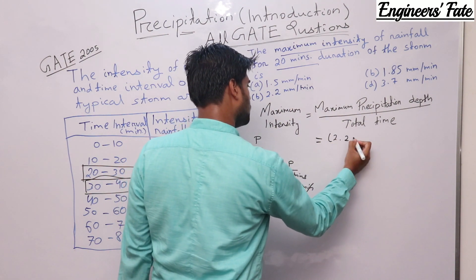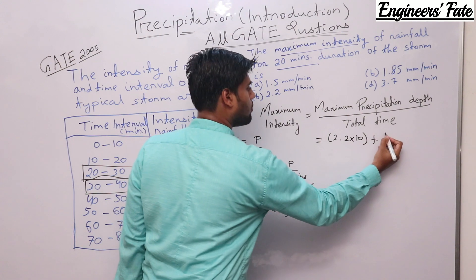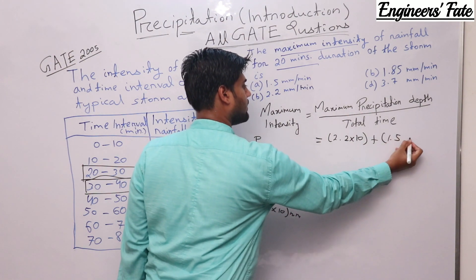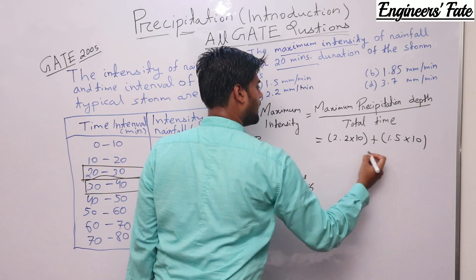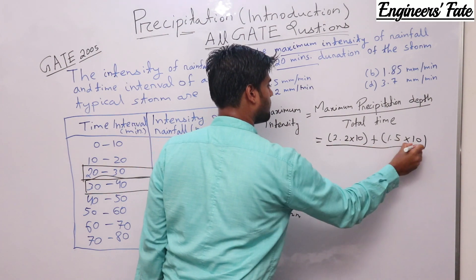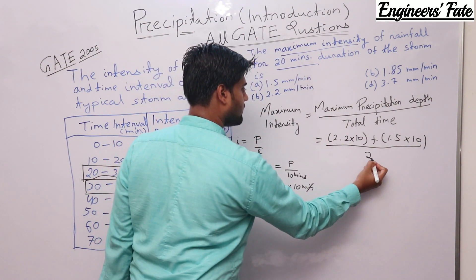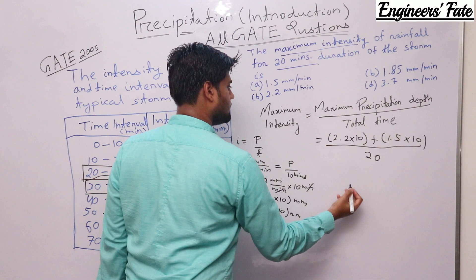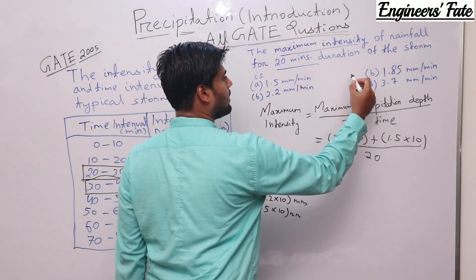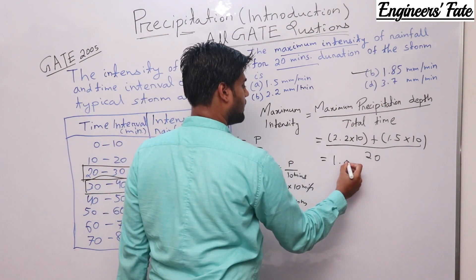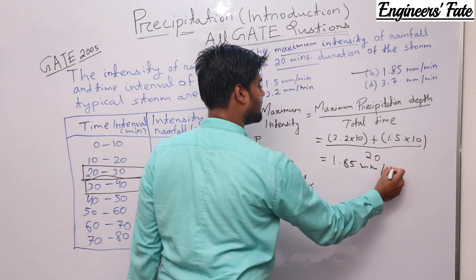The maximum precipitation depth is (2.2 × 10) + (1.5 × 10) over a total time of 20 minutes. Calculating this gives a maximum intensity of 1.85 mm per minute. So the answer is option B.